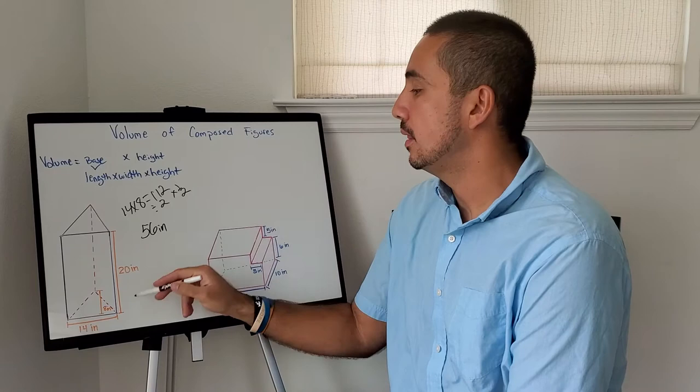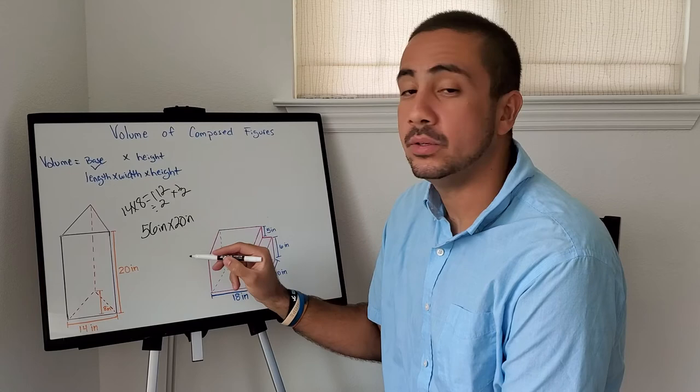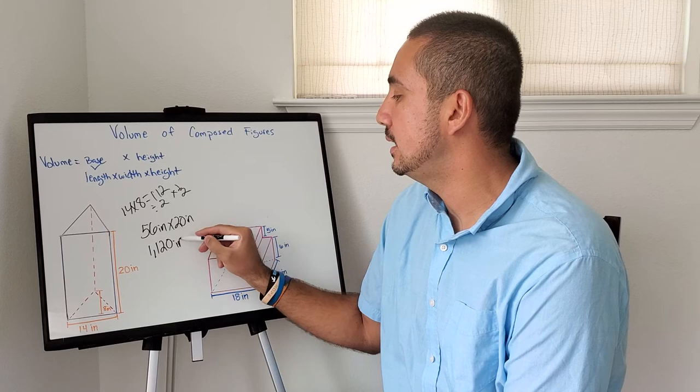20 inches. You multiply those two together, we're going to get 1120 inches cubed. Remember, now it's cubed. We'll continue on the next problem in a little bit. Just a quick reminder, don't forget about the height.